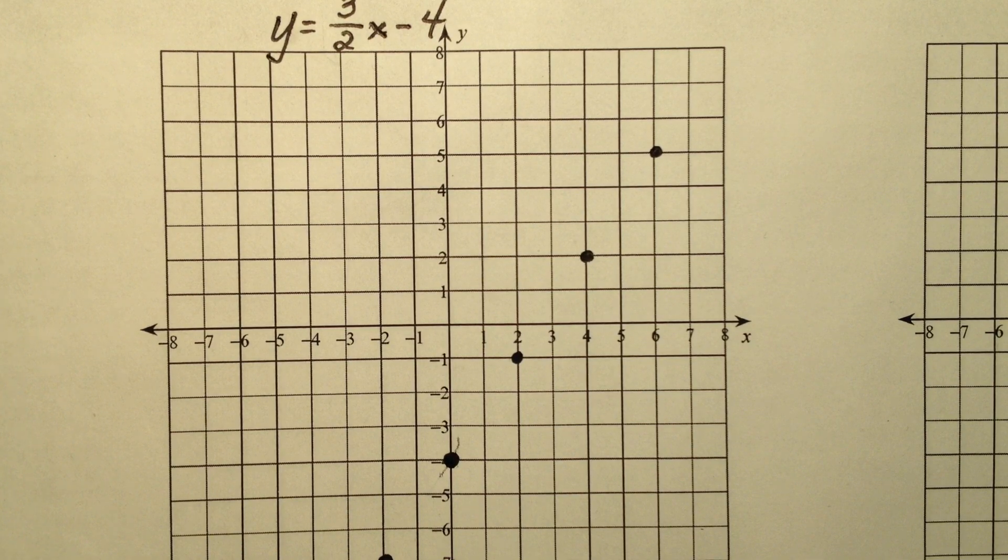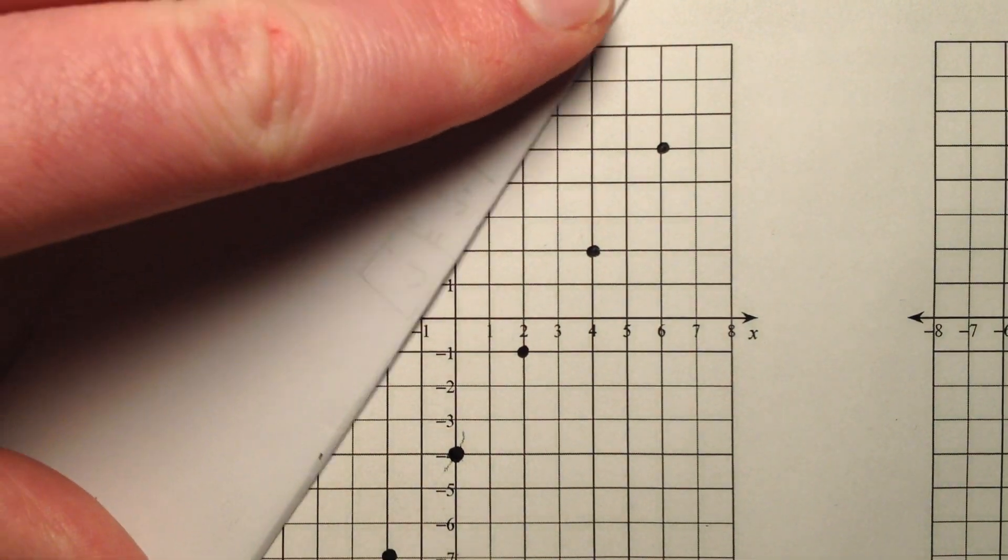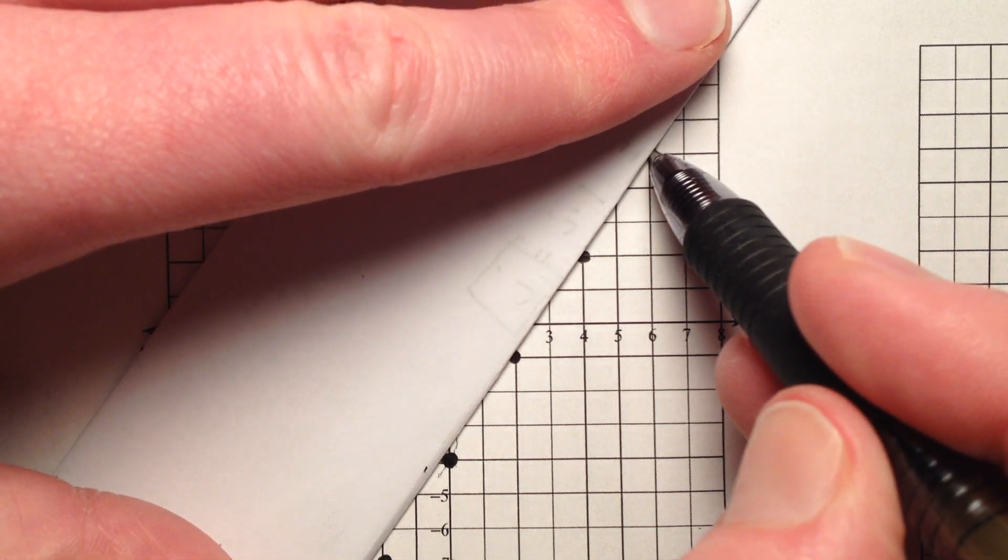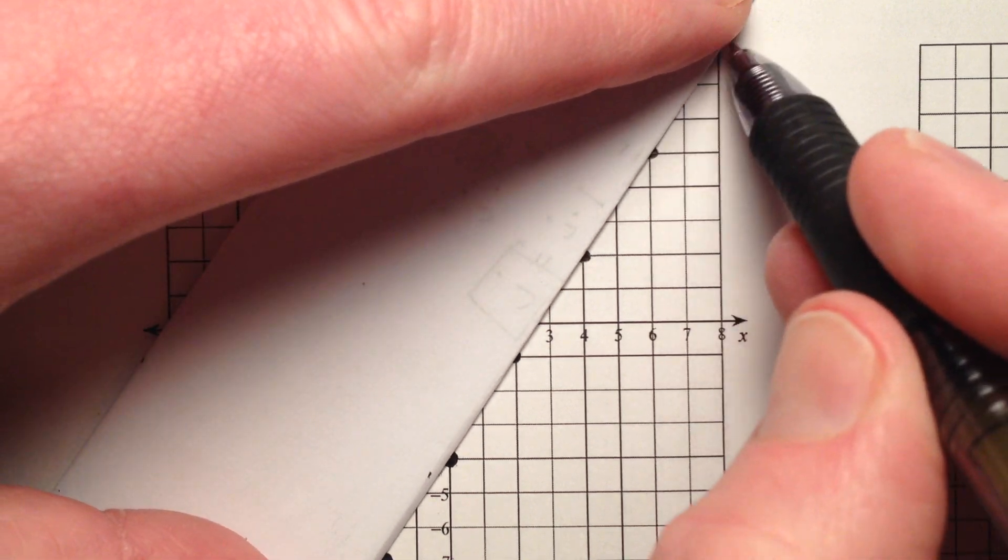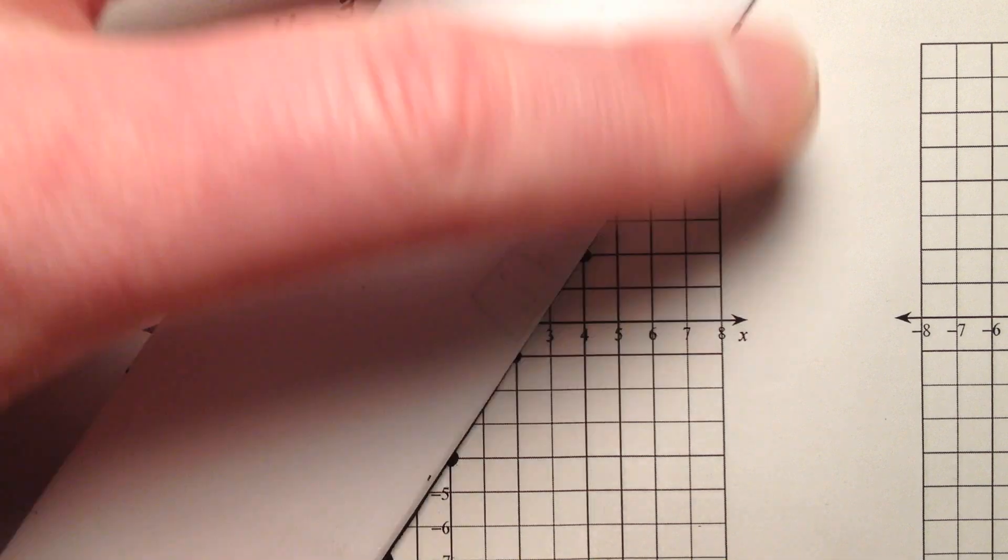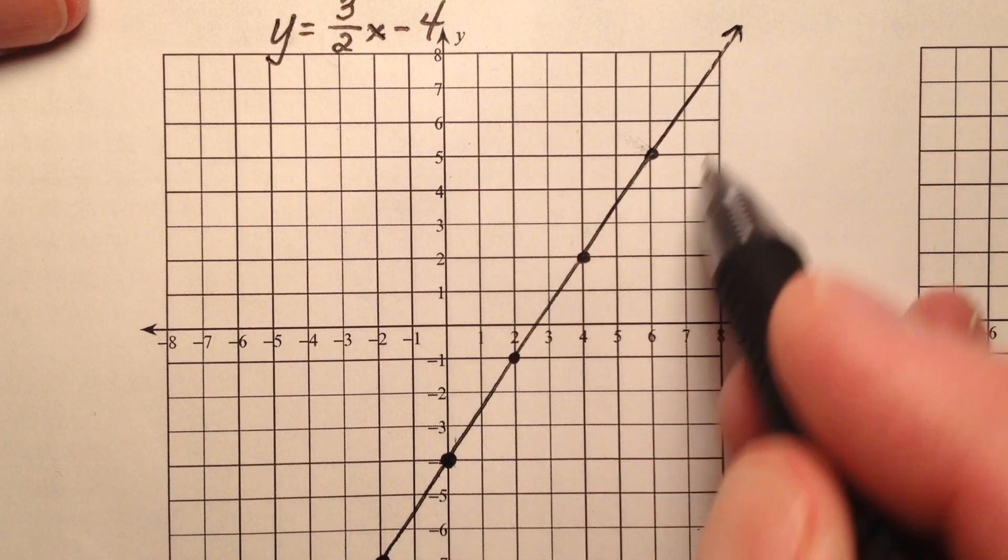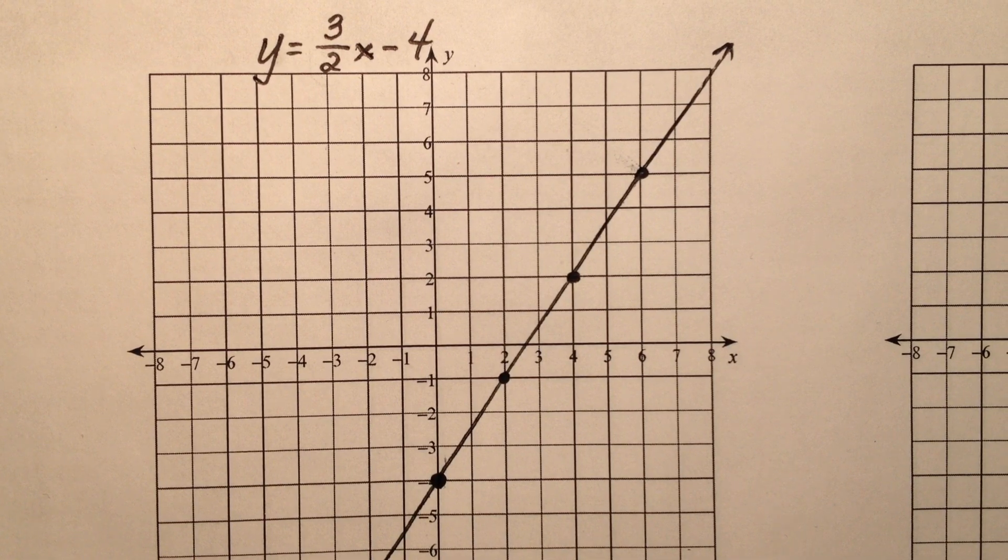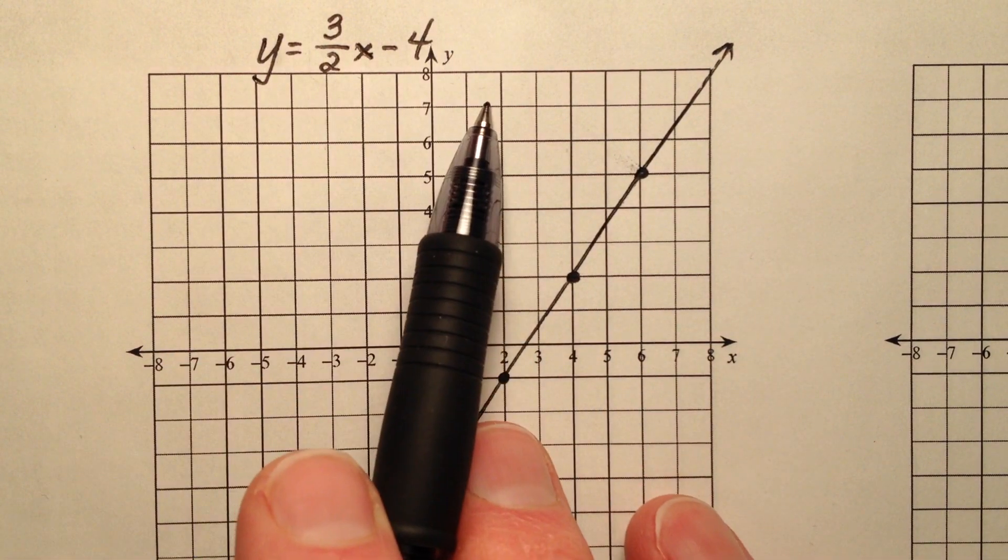So I'm going to grab my straight edge, and I'm going to go ahead and make the line here that's going to go through all of these points. So here is the graph of the equation given to us in slope-intercept form, y equals 3 halves x minus 4.